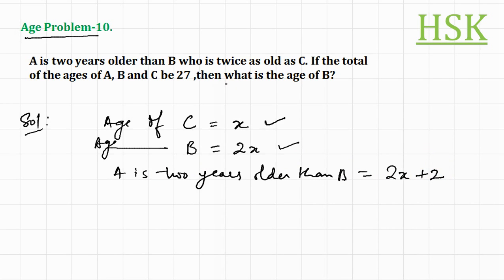In this question, we have to find the age of B. If the total of the ages of A, B and C is equal to 27.